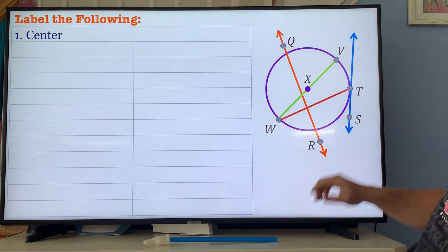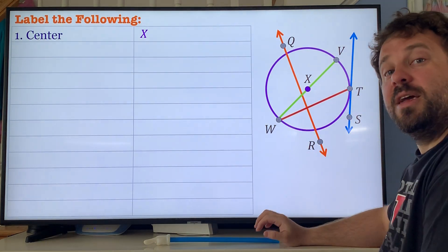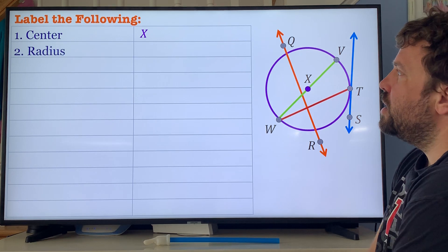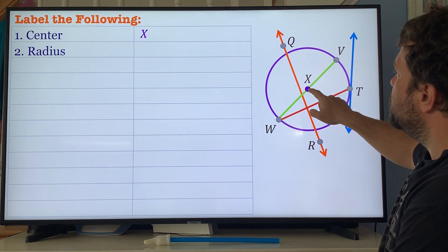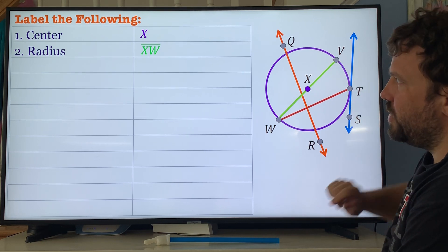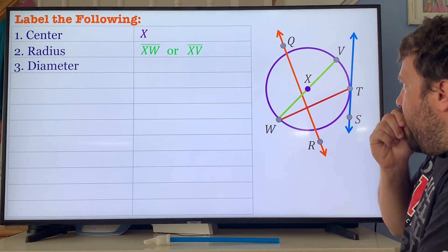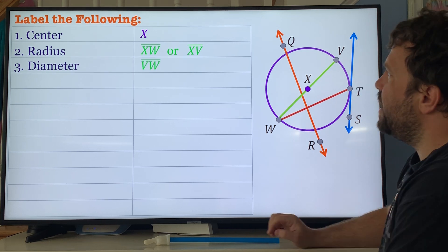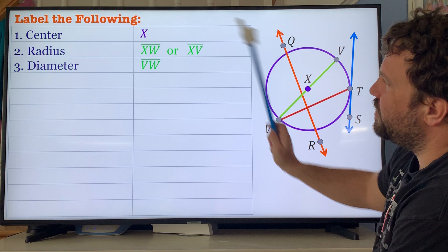First thing we're going to do is label the following. First thing you should have labeled was the center. Center is obviously x, it's at the center of the circle, equidistant from all sides. Number two is the radius, the distance from the center to the points on the outside, so you could have said XW or XV. Diameter is a chord that passes through the center. There's only one diameter and that is VW or WV, and these lines above it means segment VW.